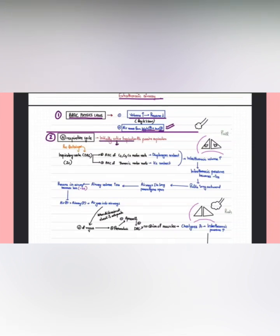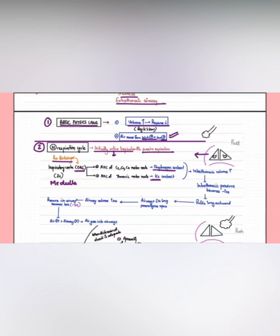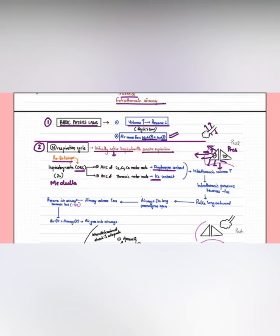In a normal respiratory cycle, there is active inspiration followed by passive expiration. The pre-Bötzinger complex and dorsal respiratory group in the medulla stimulate the intercostal muscles and the diaphragm. Due to contraction of the intercostal muscles, the chest wall moves out; due to diaphragm contraction, the diaphragm moves down. This increases intrathoracic volume, so pressure decreases and becomes more negative, pulling the lung outward and pulling the airway outward.